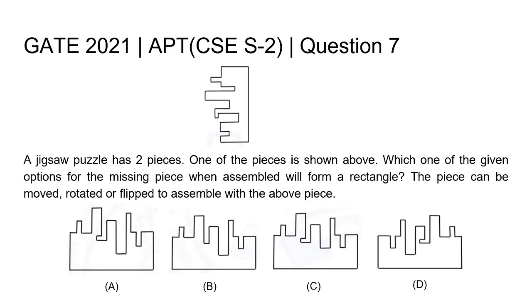Hello everyone. This is the question from GATE 2021 Computer Science Set 2. A jigsaw puzzle has two pieces. One of the pieces is shown above.